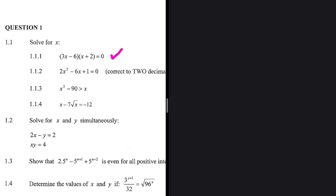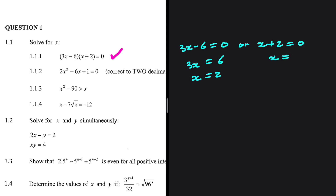If you take a look at 1.1.1, the equation is already factorized. We just need to equate to 0. So we're going to have 3x minus 6 equals 0, or x plus 2 equals 0. We're going to have 3x equals 6. We divide both sides by 3. We get x equals 2. And if x plus 2 equals 0, then x equals minus 2. So these are our two answers: x equals 2 or x equals minus 2.